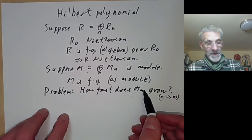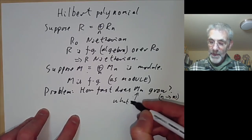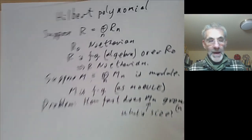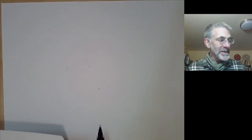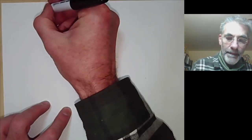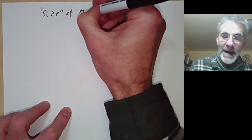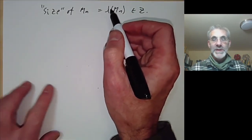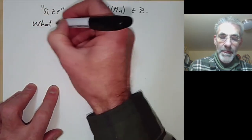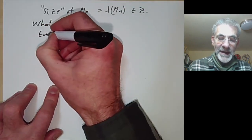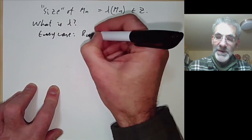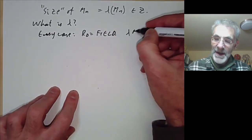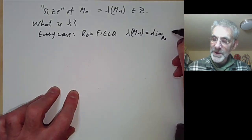In order to discuss how fast it grows we need to know what the size of M_n is, so we need some way to measure the size of a module. We're going to denote the size of M_n as λ(M_n), which will be some integer. Here's an easy case: suppose we take R_0 to be a field. Then M_n is always a finite-dimensional vector space over R_0, and we can take λ(M_n) to be the dimension over R_0 of M_n.